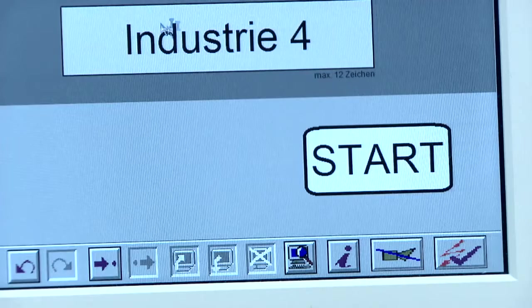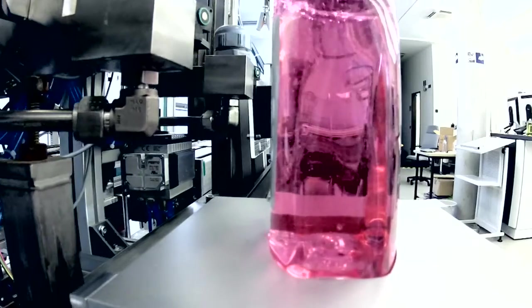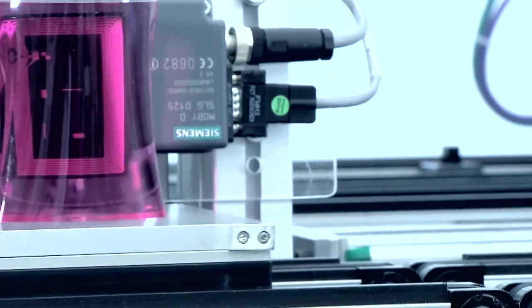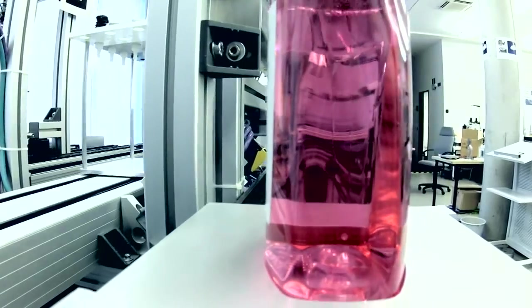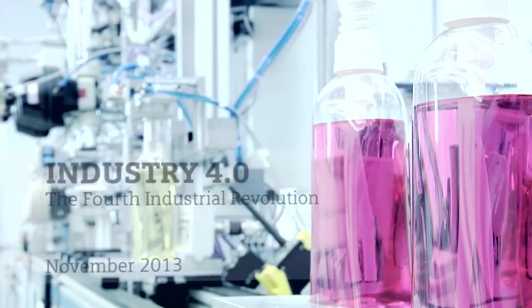Raw materials and machines are interconnected within an internet of things. The objective? Highly flexible, individualized and resource-friendly mass production. That is the vision for the fourth industrial revolution.